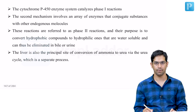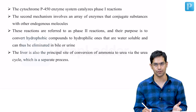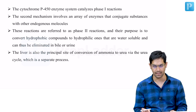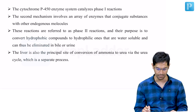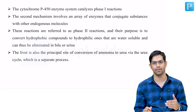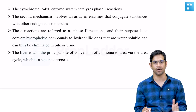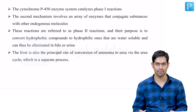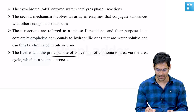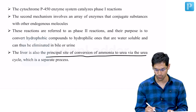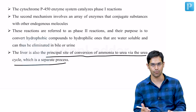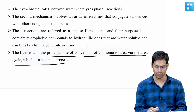The cytochrome P450 enzymatic system is the most important, catalyzing Phase 1 reactions. Phase 2 involves an array of enzymes accomplishing conjugation. In Phase 2, hydrophobic substances are converted into hydrophilic substances and eliminated through bile or urine. The liver is also the principal site of conversion of ammonia to urea via the urea cycle — ammonia is converted to water-soluble urea, which is easily excreted in urine.